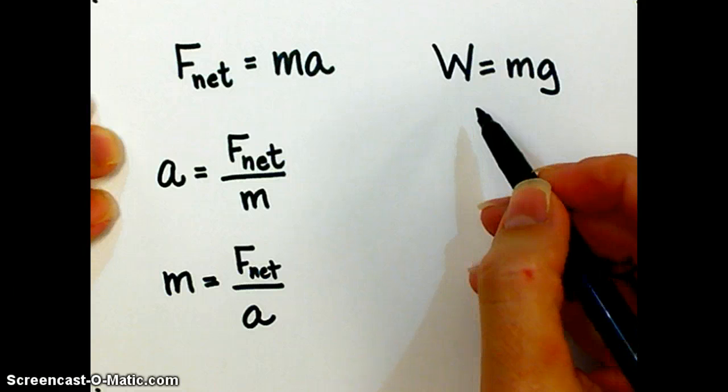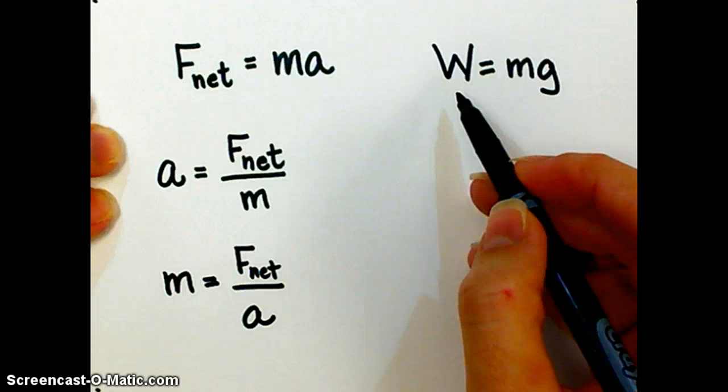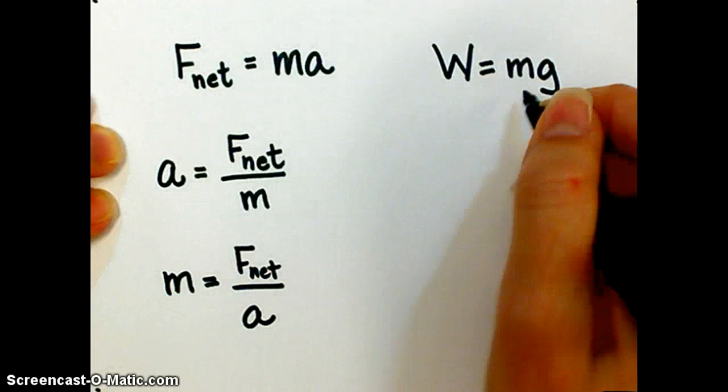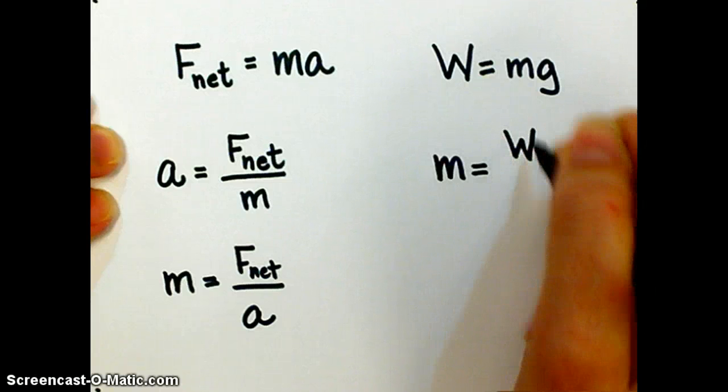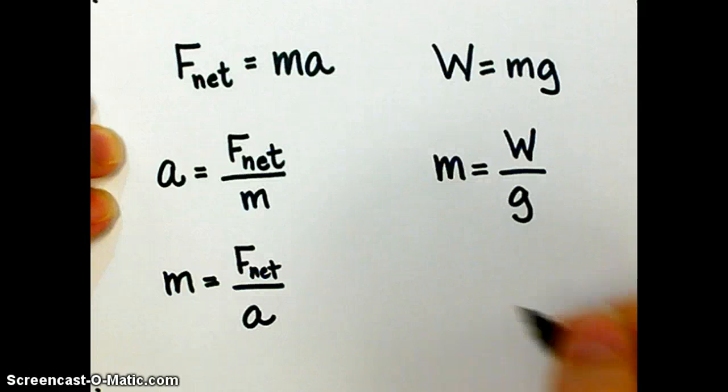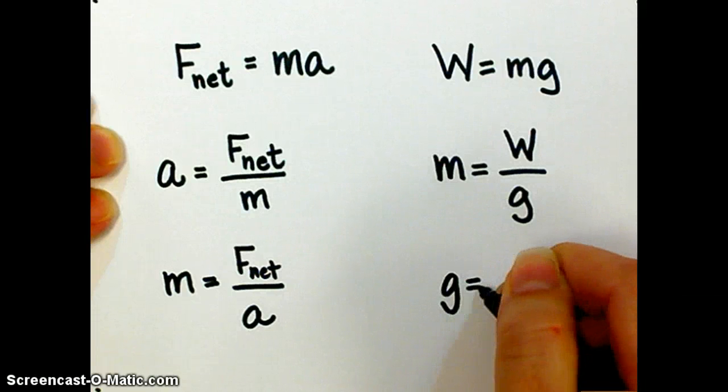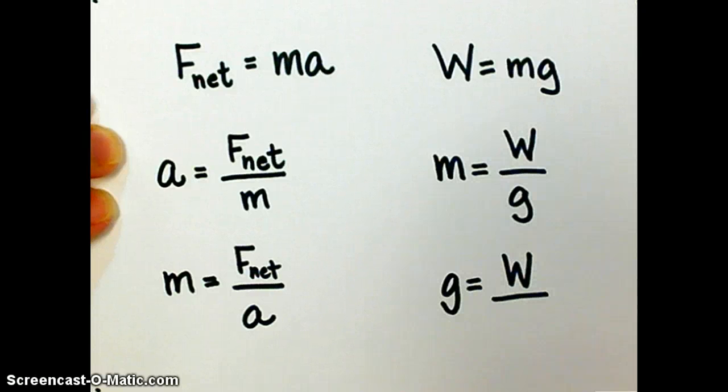Same thing here. You've got weight is equal to mass times acceleration due to gravity. Great. That solves it for weight. But what if I need something else? Mass would be weight divided by acceleration due to gravity. Acceleration due to gravity would be weight divided by what? Mass. Everybody okay with that?